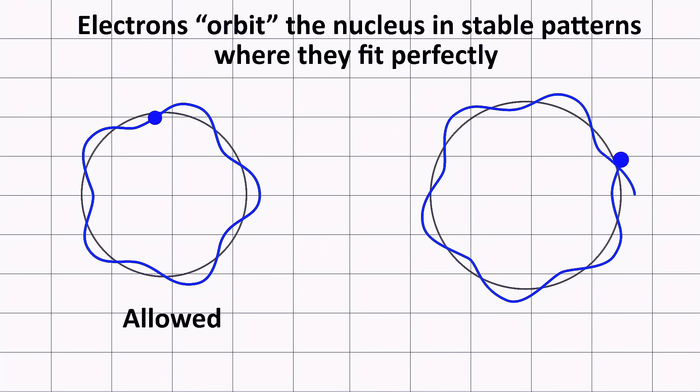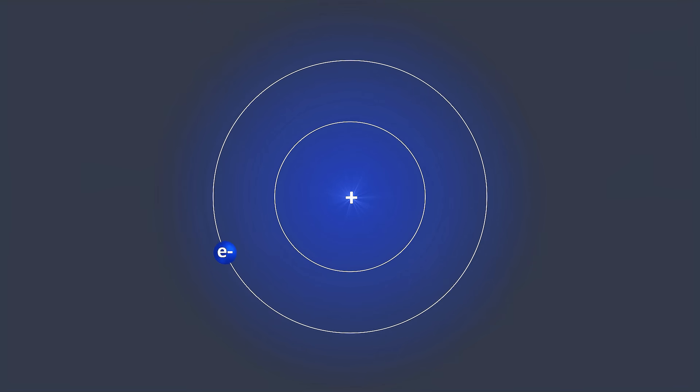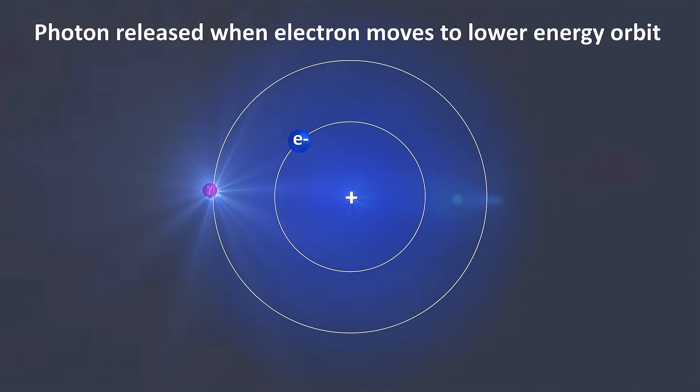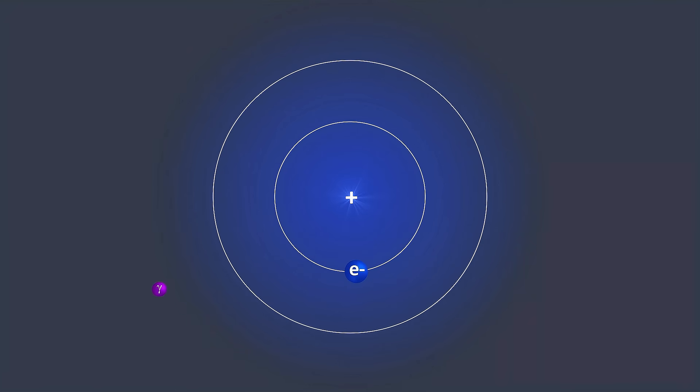They orbit the nucleus in stable patterns where the wave fits perfectly in the orbit. No more and no less. These energy levels are like rungs on a ladder. Electrons can jump between them, but they can't exist in between. When an electron drops from a higher energy level to a lower one, it releases energy in the form of a photon, a packet of light. The energy of this photon precisely matches the energy gap between the levels. And when electrons absorb a photon, it's like getting a quantum boost, which leaps them to a higher energy state.